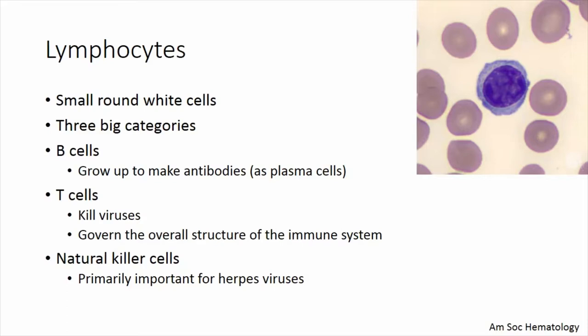B cells are the cells that grow up to make antibody—they are trained to make antibody against infectious threats. Once they're doing that, they're called a plasma cell. T cells have a couple of functions: their main function is to kill virally infected target cells, but they're also the governors of the immune system. And natural killer cells are very important for the defense against herpes viruses—a family that includes Epstein-Barr virus, cytomegalovirus, and other types.